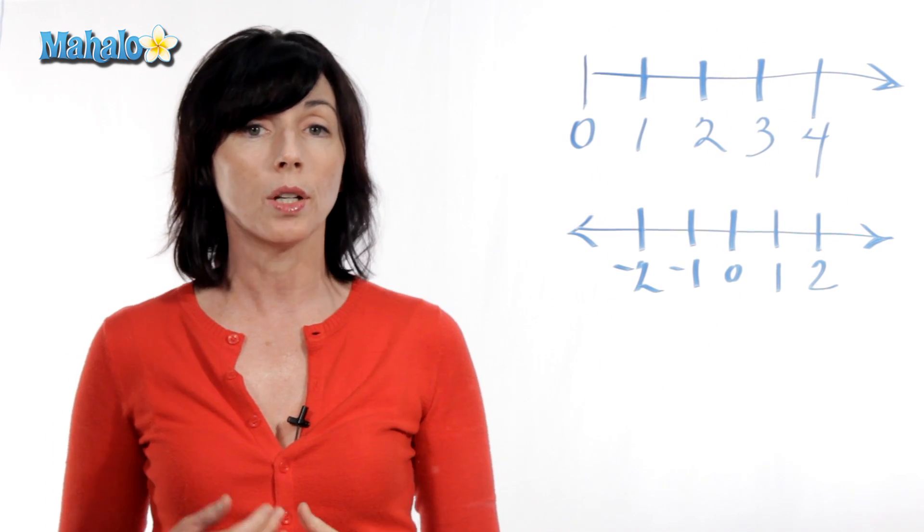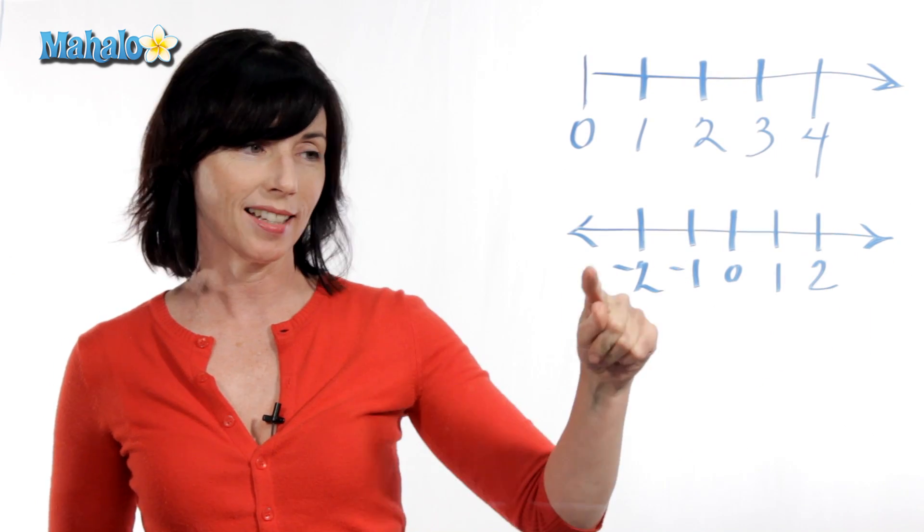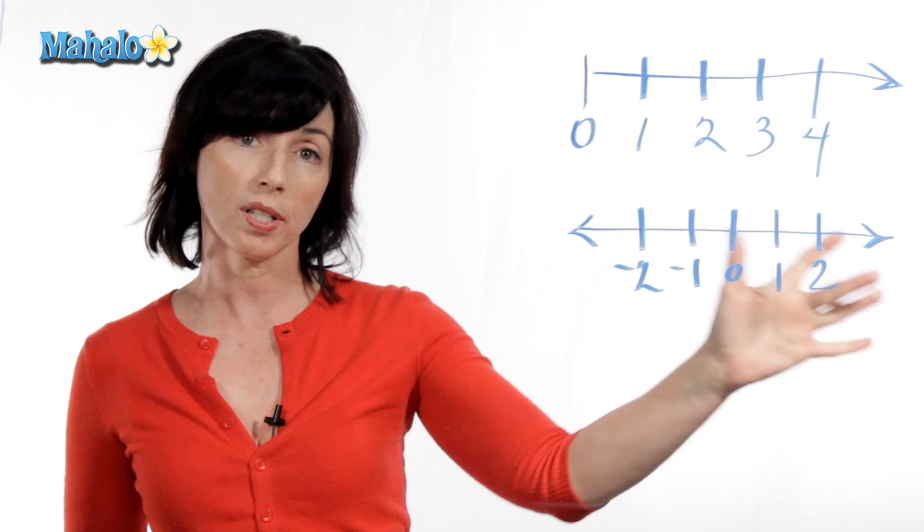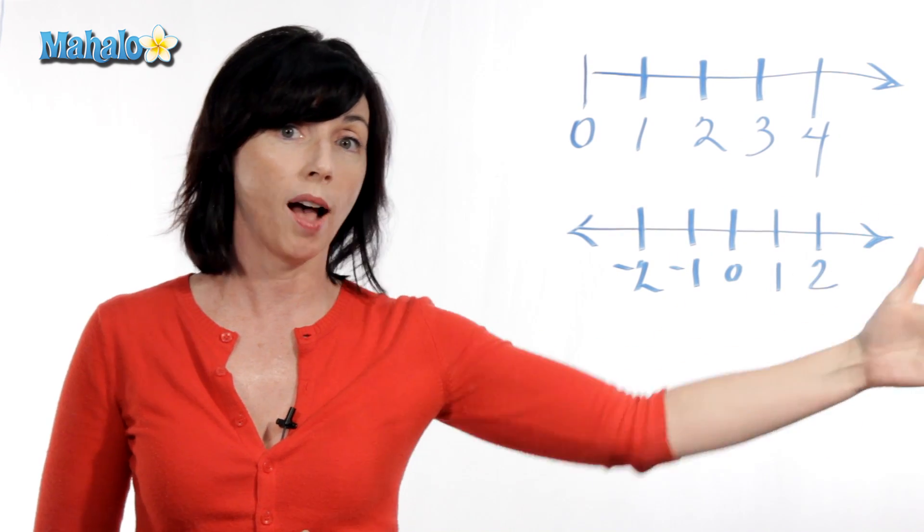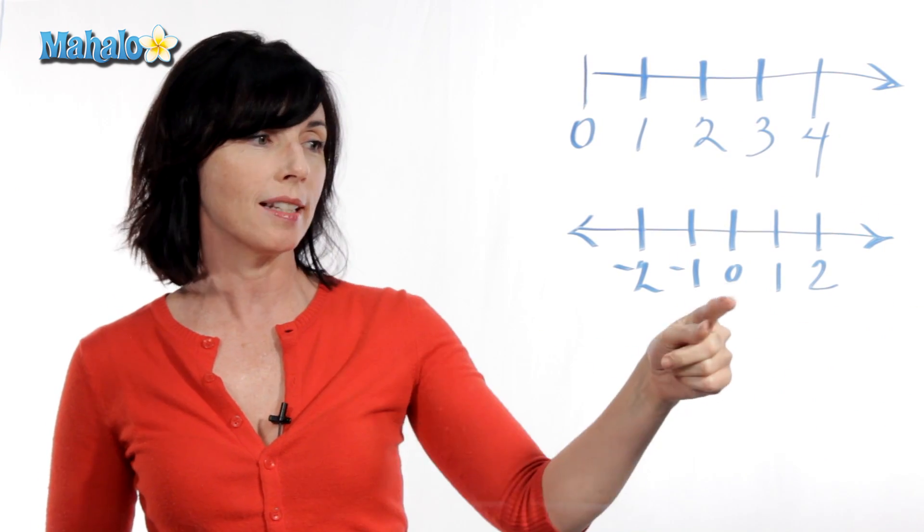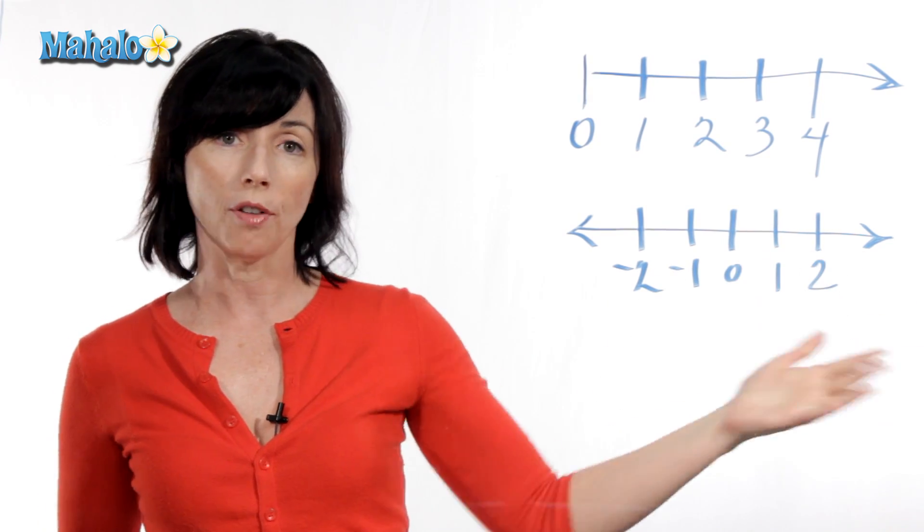Now, if you're using real numbers or integers, then you want to draw your number line like this. It has an arrow on both sides, because that indicates that the numbers keep going in both directions, positive and negative. Usually zero goes in the middle, and then you just continue to write your numbers off in both directions.